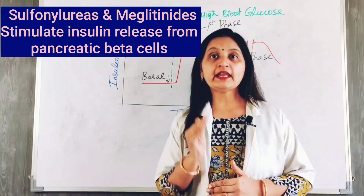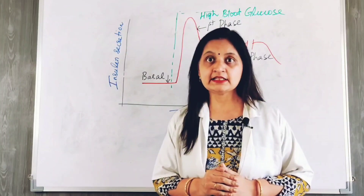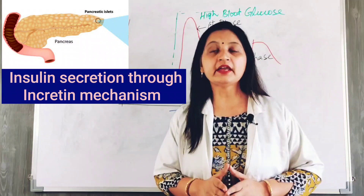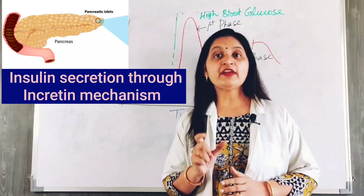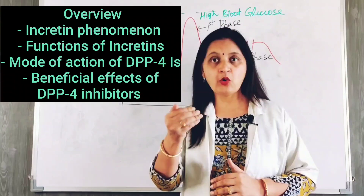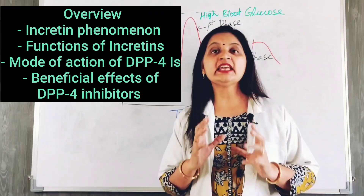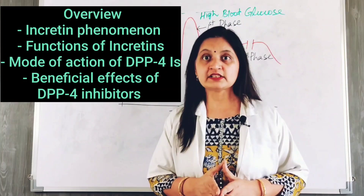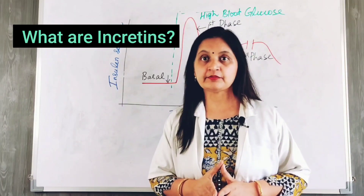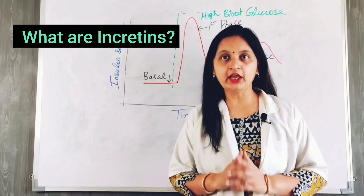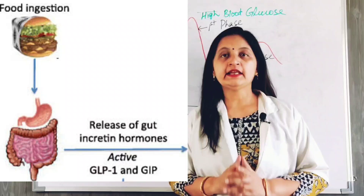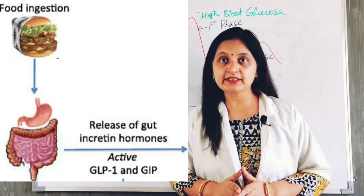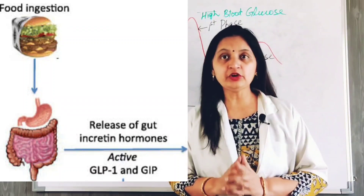An alternative mechanism to enhance insulin secretion by the pancreatic beta cells is through the incretin mechanism. In this video we will learn about what incretins are and the incretin phenomenon, the various functions of incretins, how they help in lowering blood glucose levels, and how DPP-4 inhibitors — a new class of anti-diabetic drugs — help in lowering blood glucose levels and exert anti-diabetic action. Incretins are gastrointestinal hormones, namely glucagon-like peptide-1 (GLP-1) and gastric inhibitory polypeptide (GIP), known as incretin hormones.